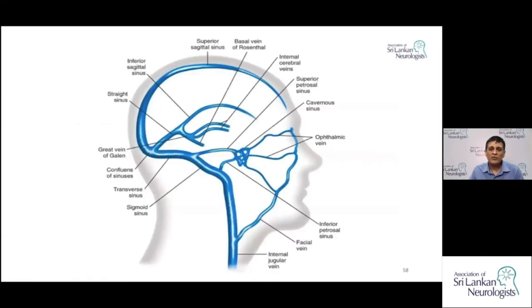Before we get on to more details about venous thrombosis, I think we need to get back to anatomy and try to recall what these sinuses and the cerebral veins are. If you look at this diagram, I will just go through them.